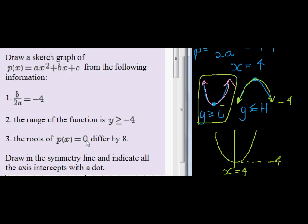My y value is 0 when I cut the x-axis. So the roots are where I cut the x-axis. And I see I've got two roots. And according to this information, my roots are 8 units apart from each other, which means it's 4 units on one side - 1, 2, 3, 4 - and 4 units on the other side of the symmetry axis, which means if I started at 4, I'll end at 8, and the other one will be at 0. So there I have my information to go and draw my graph.